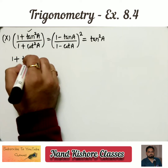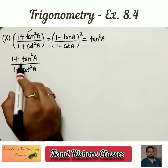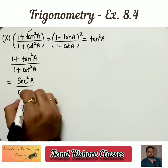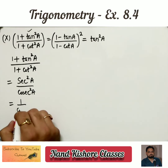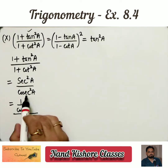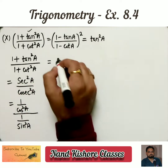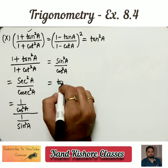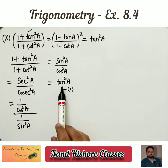Starting with (1 plus tan square a) over (1 plus cot square a). Using the formula: 1 plus tan square a equals secant square a, and 1 plus cotangent square a equals cosecant square a. Secant square a is 1 by cos square a, and cosecant square a is 1 by sin square a. Sin square a moves to the top, cos square a stays in denominator, and sin by cos is tangent — so it equals tan square a.